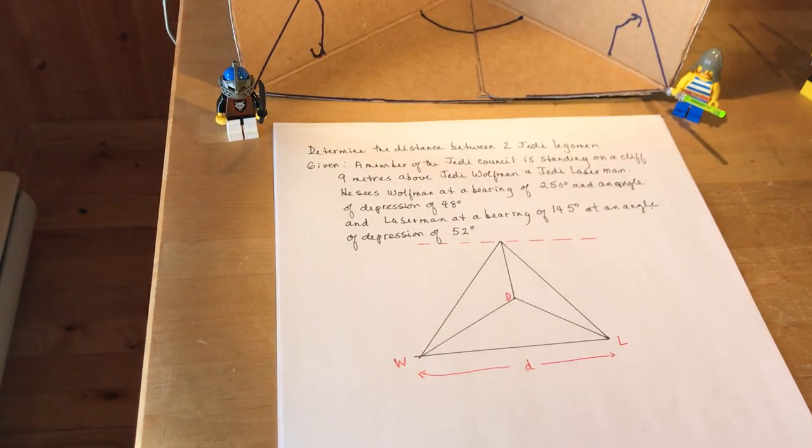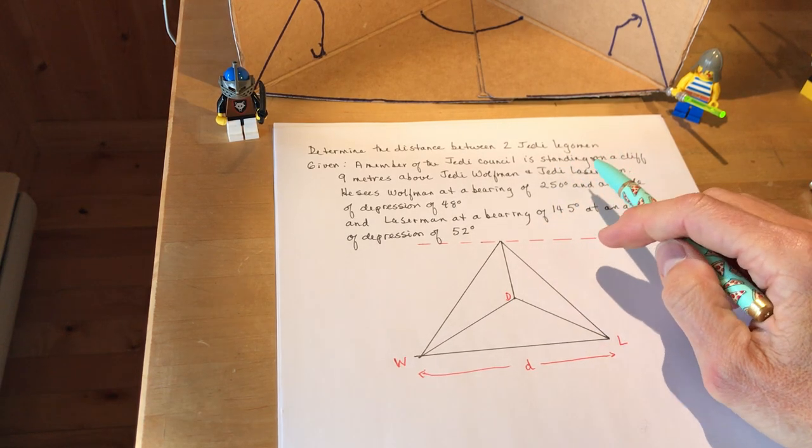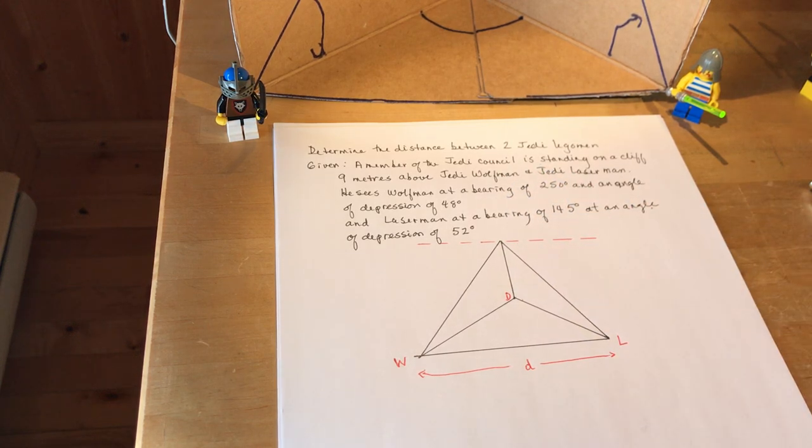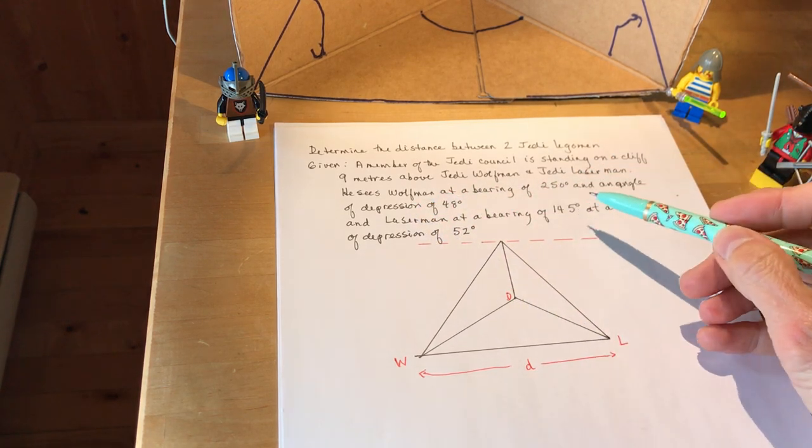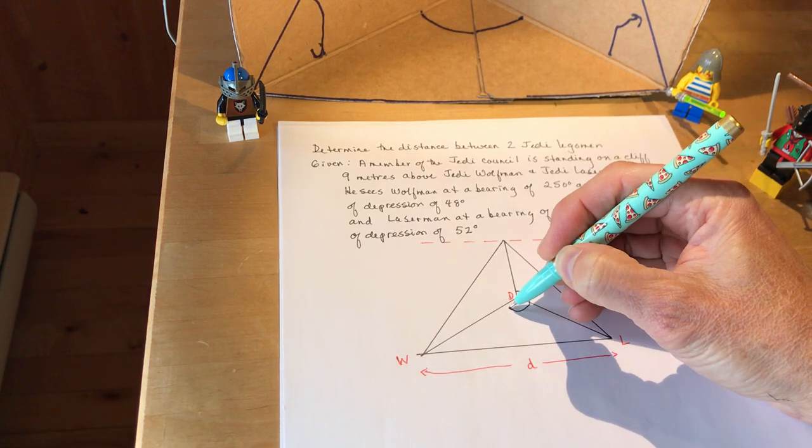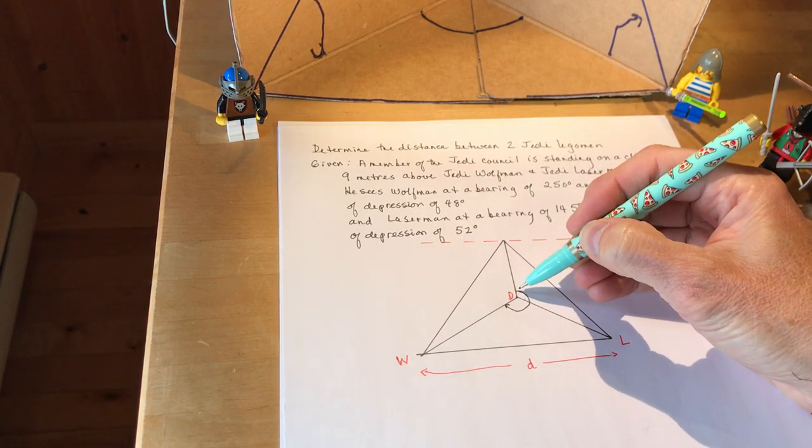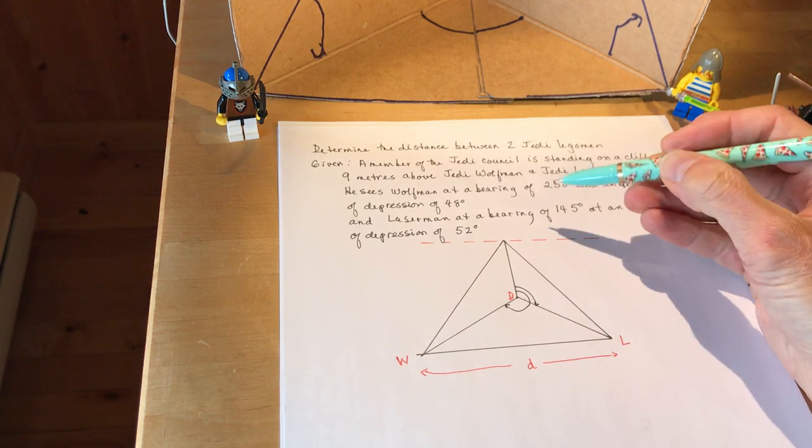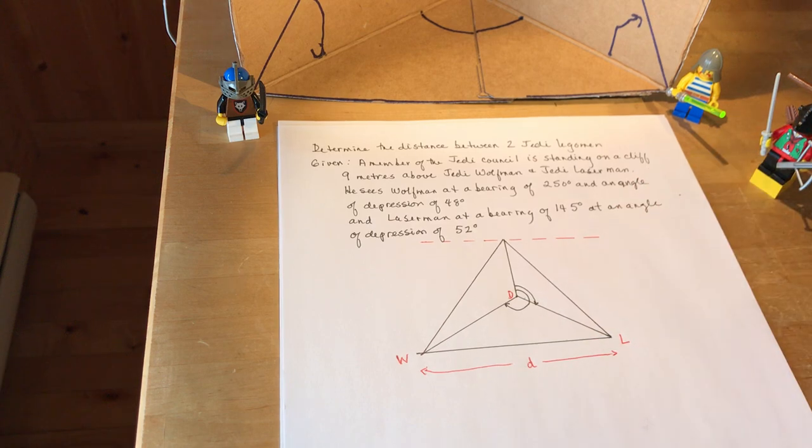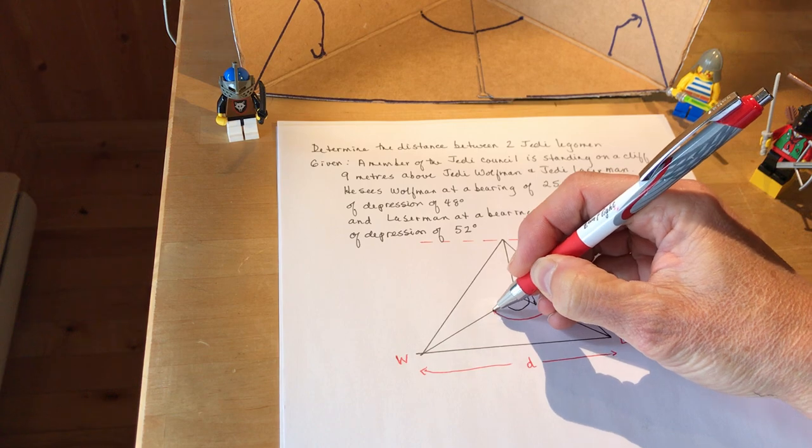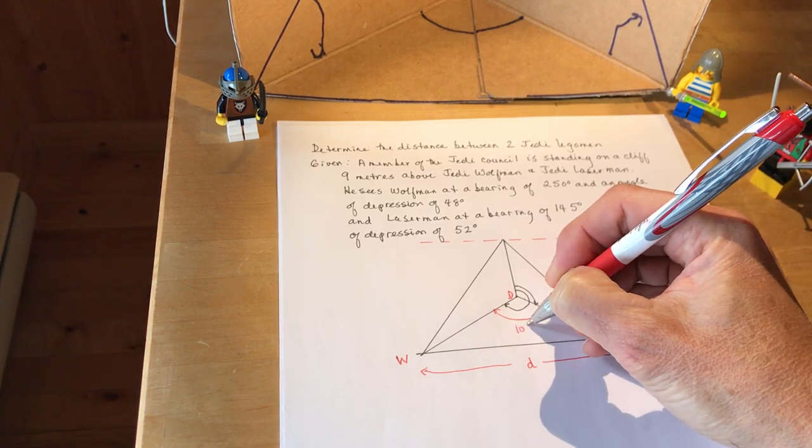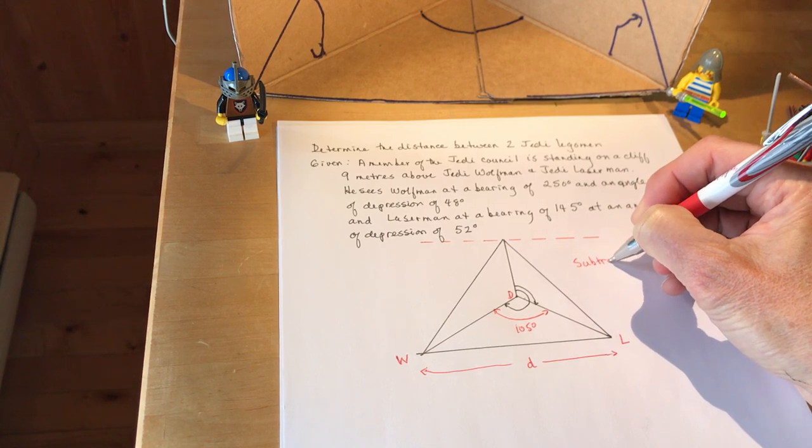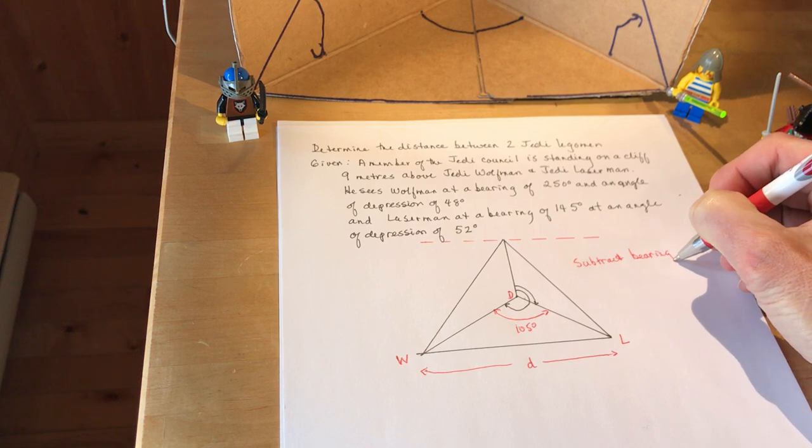So let me just rearrange my camera here so that you can see the word problem in words now. So to determine the distance between two Jedi Lego men given a member of the Jedi Council standing on a cliff nine meters above. Here he was and he's looking down and the bearing to Wolfman is 250 degrees. So that means from here swinging around is 250 degrees and from here to this guy Jedi Laser Man was only 145. So this angle here is just the difference in the bearings. You will always be given two bearings. So this is going to be 105 degrees. So 250 degrees minus 145 degrees gives me 105 degrees.